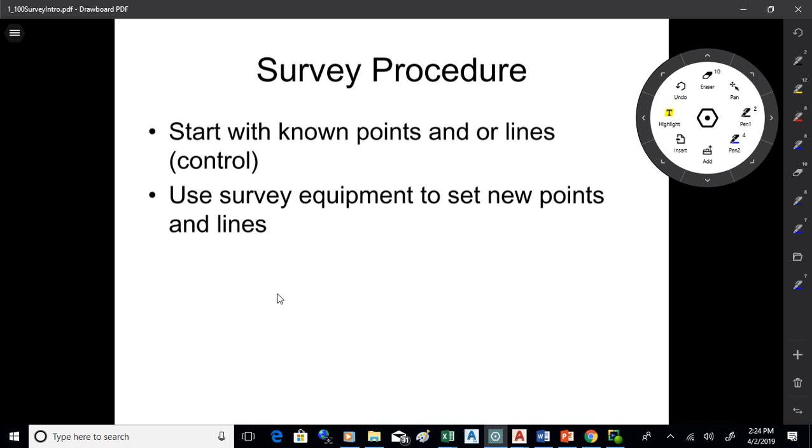Generally speaking, you got to know a point and a line. If you're way back a long time ago and you needed to establish control, you'd probably take star shots to establish latitude and longitude on the earth.